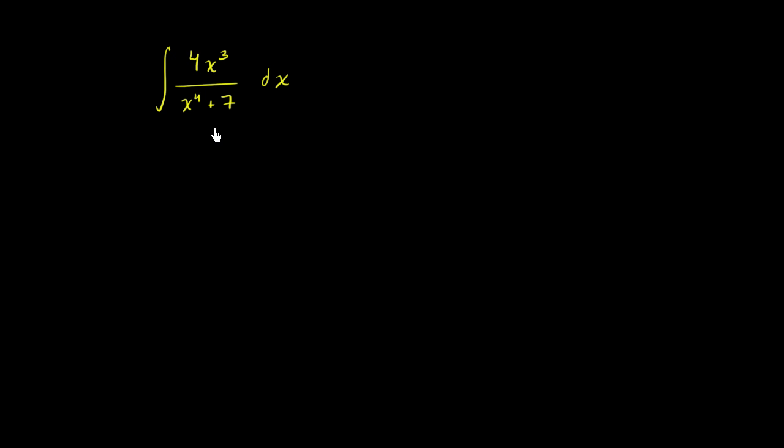Now the key insight here is to realize that you have this expression x to the fourth plus 7, and you also have its derivative up here. The derivative of x to the fourth plus 7 is equal to 4x to the third. Derivative of x to the fourth is 4x to the third. Derivative of 7 is just 0.